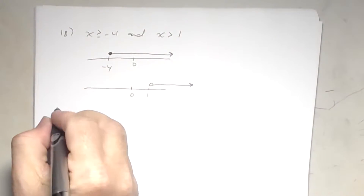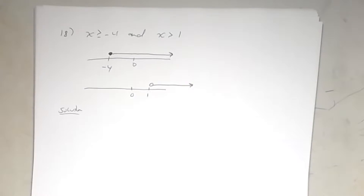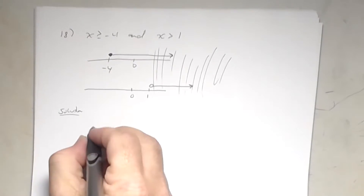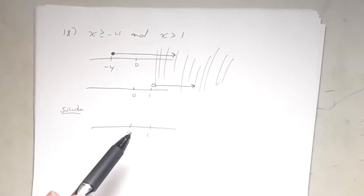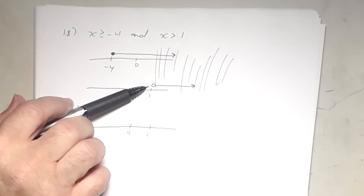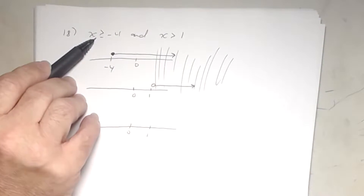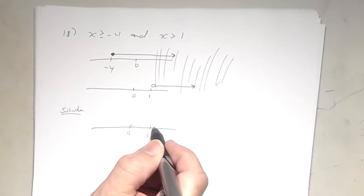This is an 'and' statement, so look for where the two graphs have in common. They intersect from 1 to infinity. On the final graph, place one with an open circle — because for the number 1: is 1 ≥ -4? Yes. Is 1 > 1? No. So it's not a solution; open circle at one going right. Interval notation: parenthesis 1, comma infinity, parenthesis.